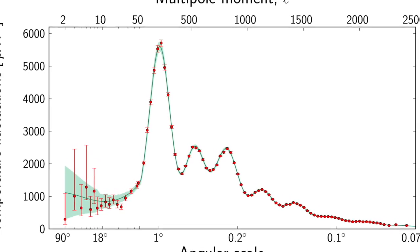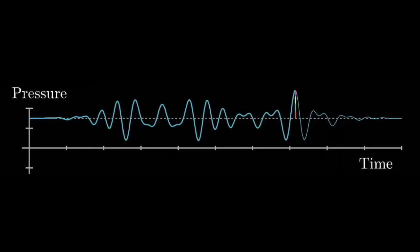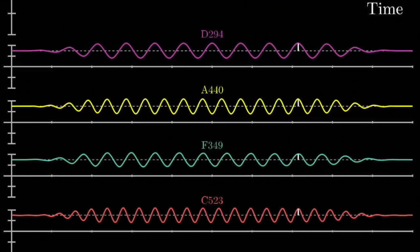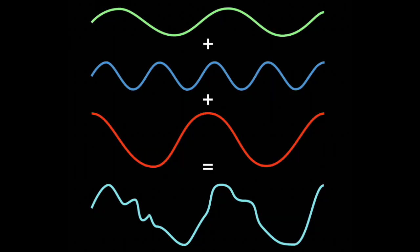First, we need some quick math background. Even the most complex functions can be broken down into many component sine waves, which are much more simple oscillations. When you add up all the individual sine waves, you get back the original complex signal.